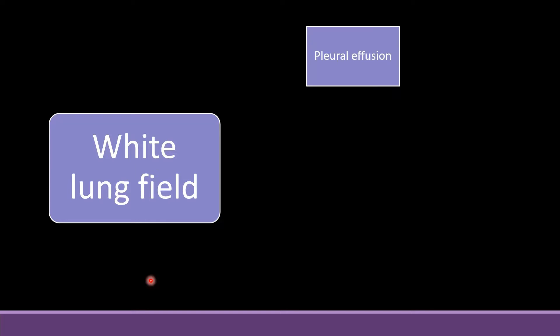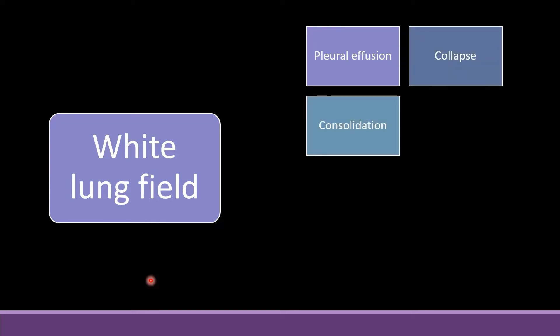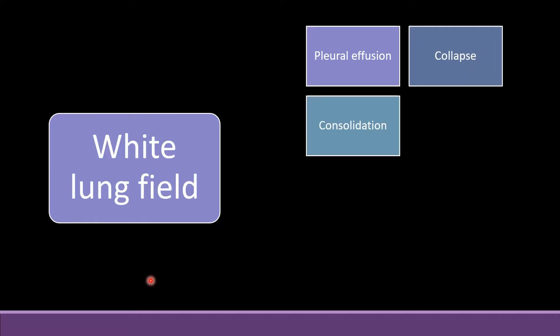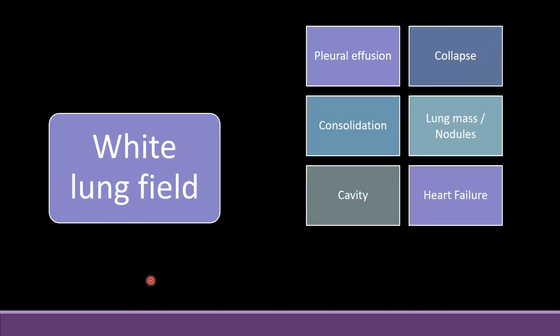White opacification or opacities on chest X-ray can be due to various reasons, including effusion, collapse of the lung, consolidation, lung mass or nodules, cavity, or it can also be seen in heart failure.